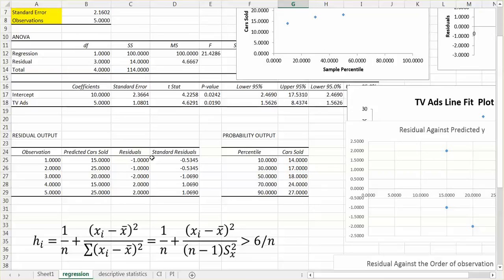Once we look at the standard residual column, if we find any standard residual is larger than two or smaller than negative two, we will identify the outliers.